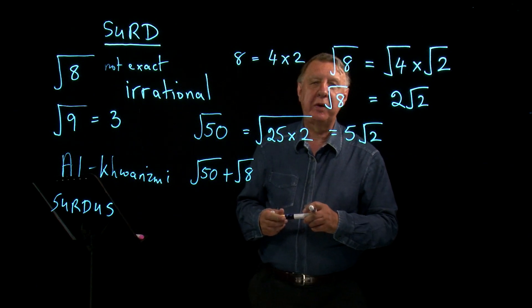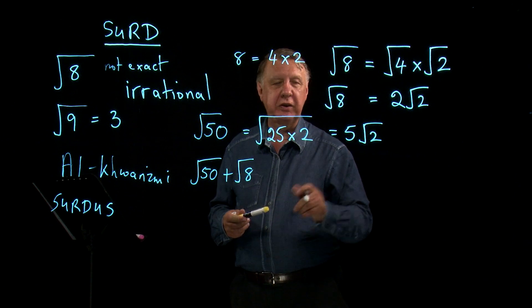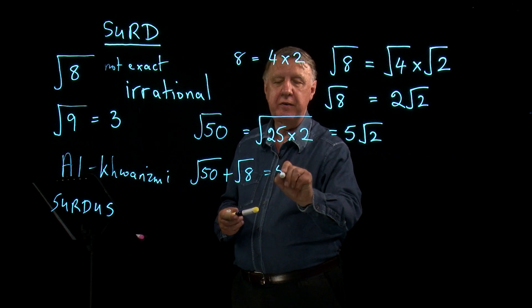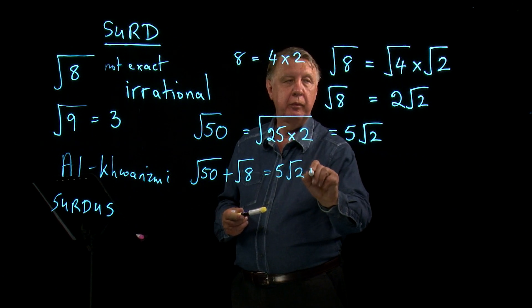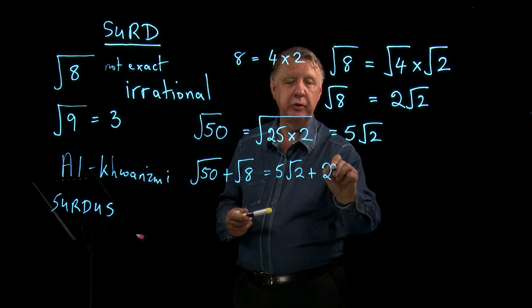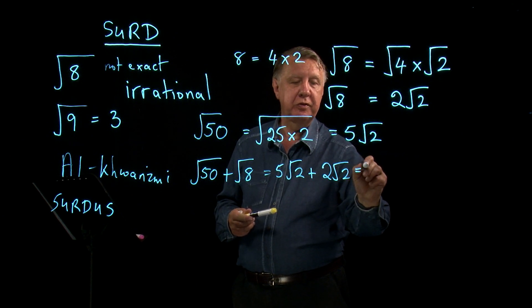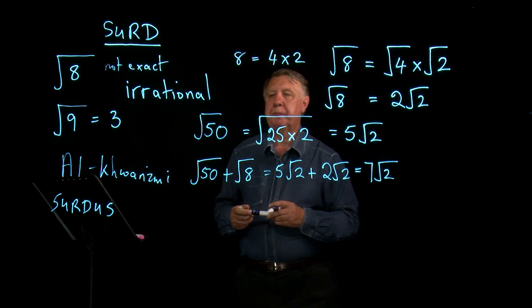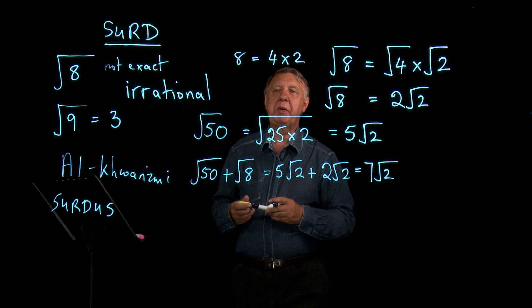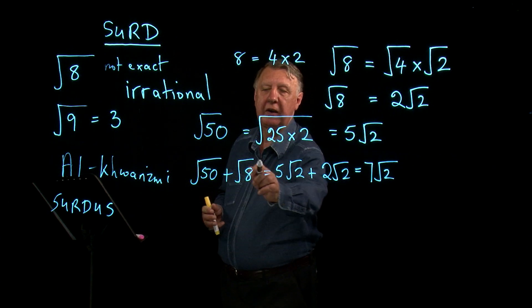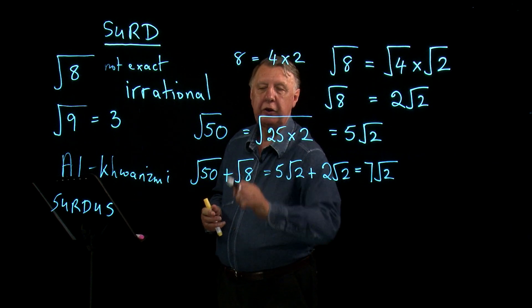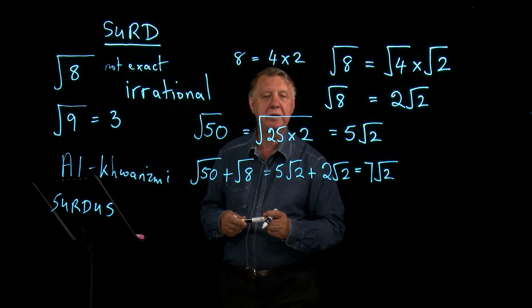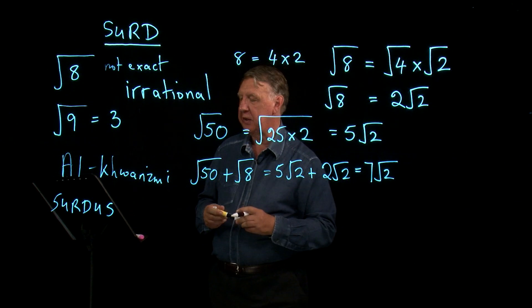This enables us to be a bit more sophisticated than that, because I can write that as 5 root 2 plus 2 root 2, which, of course, is 7 root 2. So I've been able to simplify a calculation here using the properties of surds and make it a much easier answer.